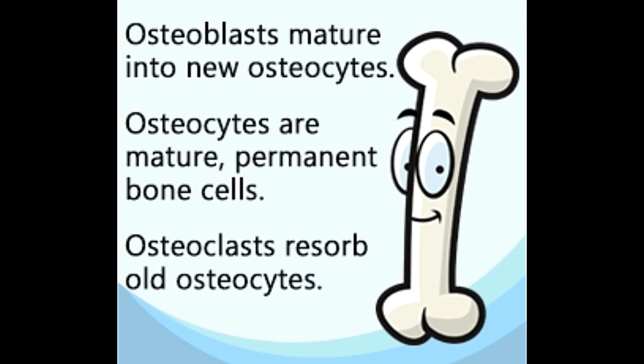Osteoblasts, osteocytes, and osteoclasts are all types of cells closely associated with bones. Here's more about these cells, what functions they perform, and how they differ from each other.